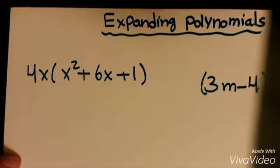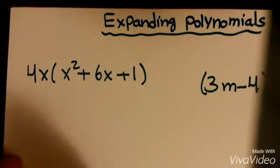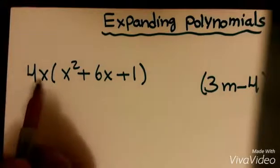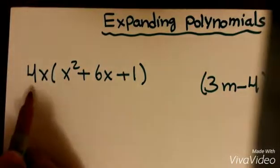Expanding polynomials: first, you have to times all the terms on the inside of the brackets by the term outside.